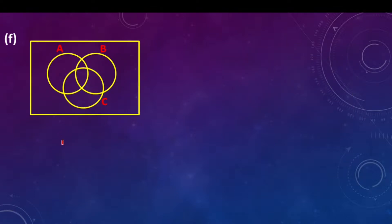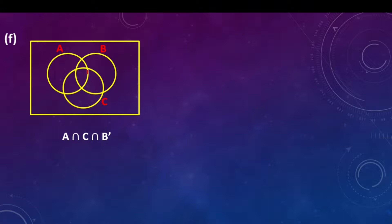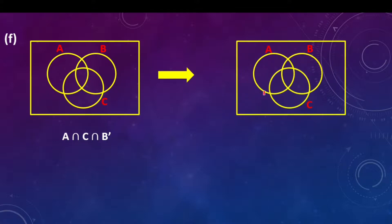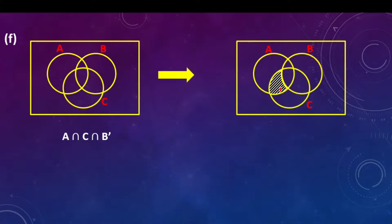Part F says A intersection C intersection B complement — those that are NOT in B. Those in A are here; A intersection C they are here; intersection B they would be here. But they don't want those in B, so we only indicate A intersection C. This part — A intersection C only — because the B-intersecting part is complement and not supposed to be included.